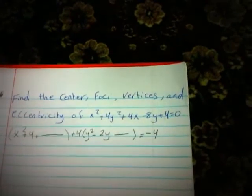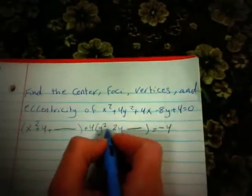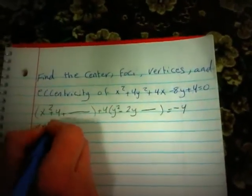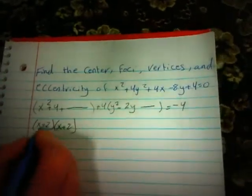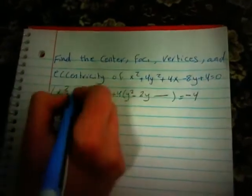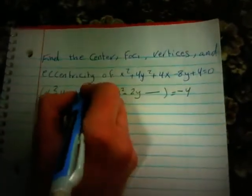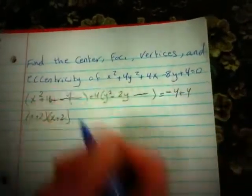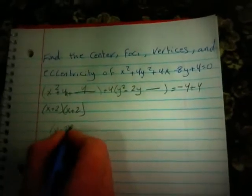Now we want to complete the square. If we do x plus 2 times x plus 2, we get x squared plus 4x plus 4, and 2 times 2 is plus 4. We put that same value outside as plus 4, so this becomes x plus 2 squared.